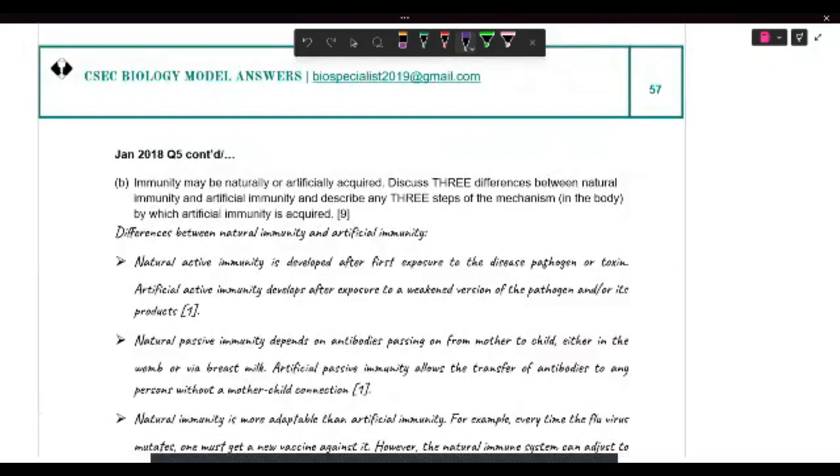And they're saying immunity might be naturally or artificially acquired. And they're asking us for differences between the natural and artificial and steps, any three steps, by which artificial immunity is acquired.